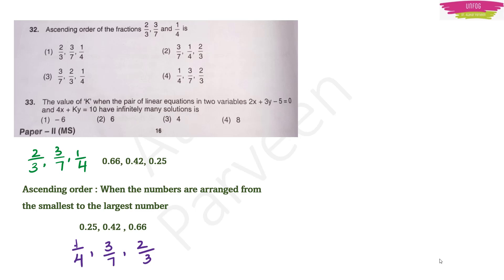Ascending order of the fractions 2/3, 3/7, and 1/4: the easiest method is to convert them to decimals and arrange from smallest to largest. Option 4 is the right answer.